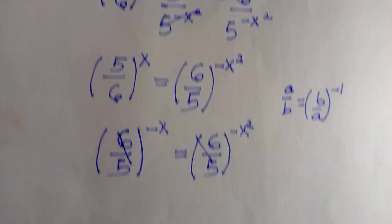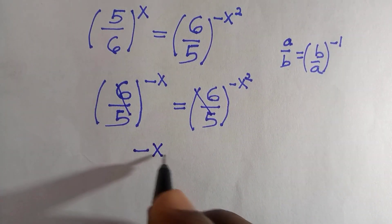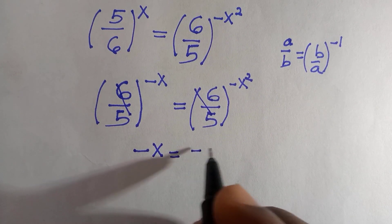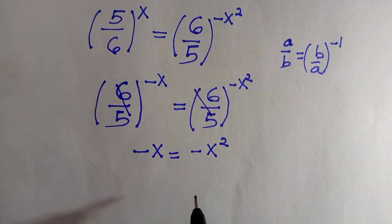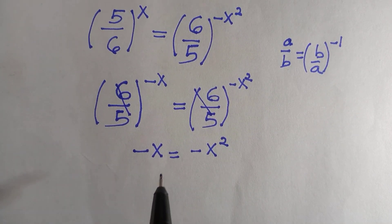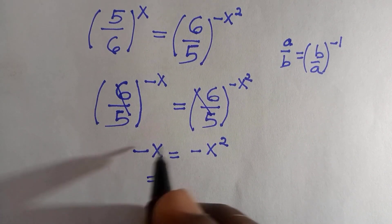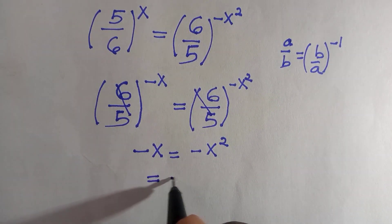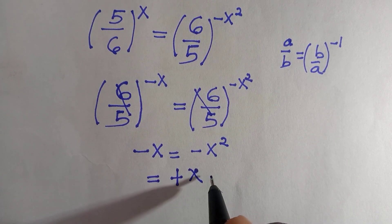We have a common base, so we cancel this, and we are left with negative x equals negative x raised to the power of two. At this stage, we transfer negative x to that side, and we have zero left here.